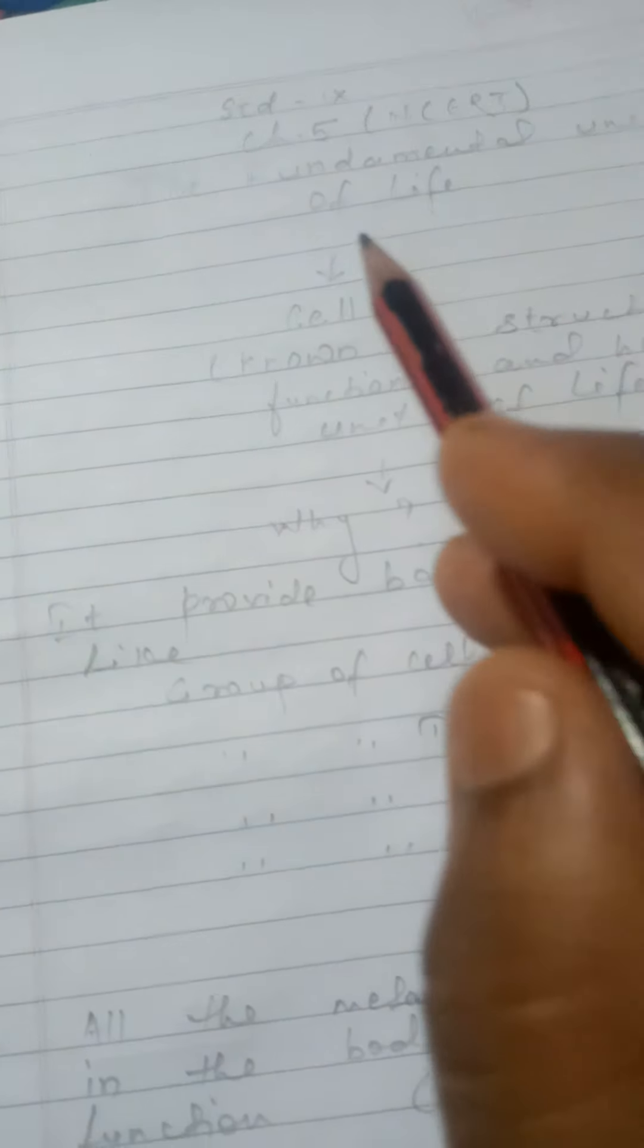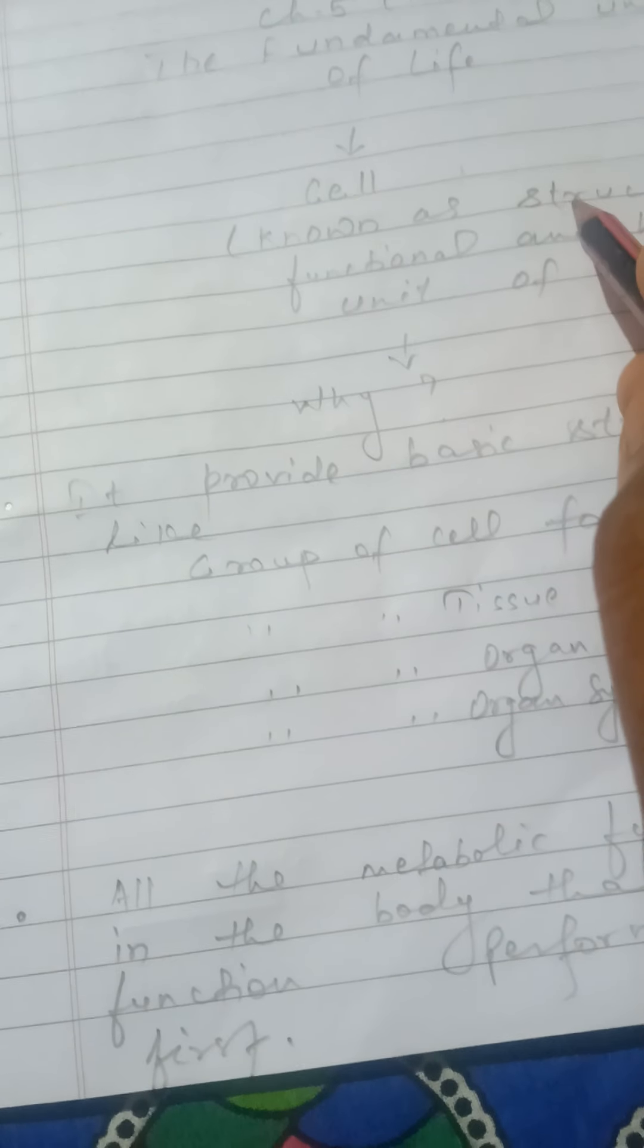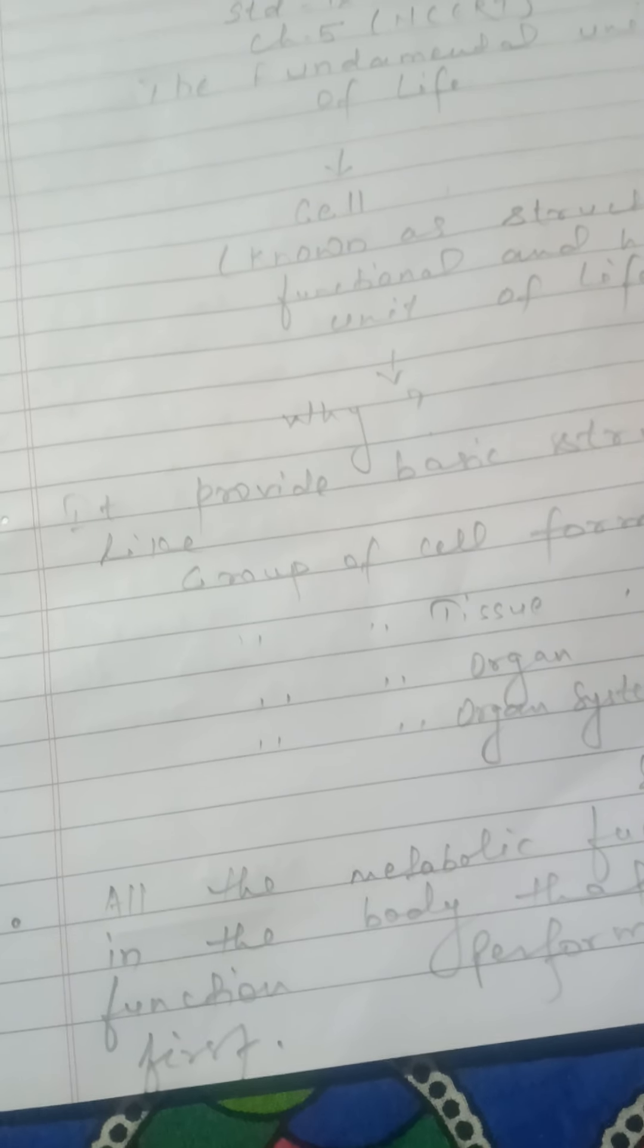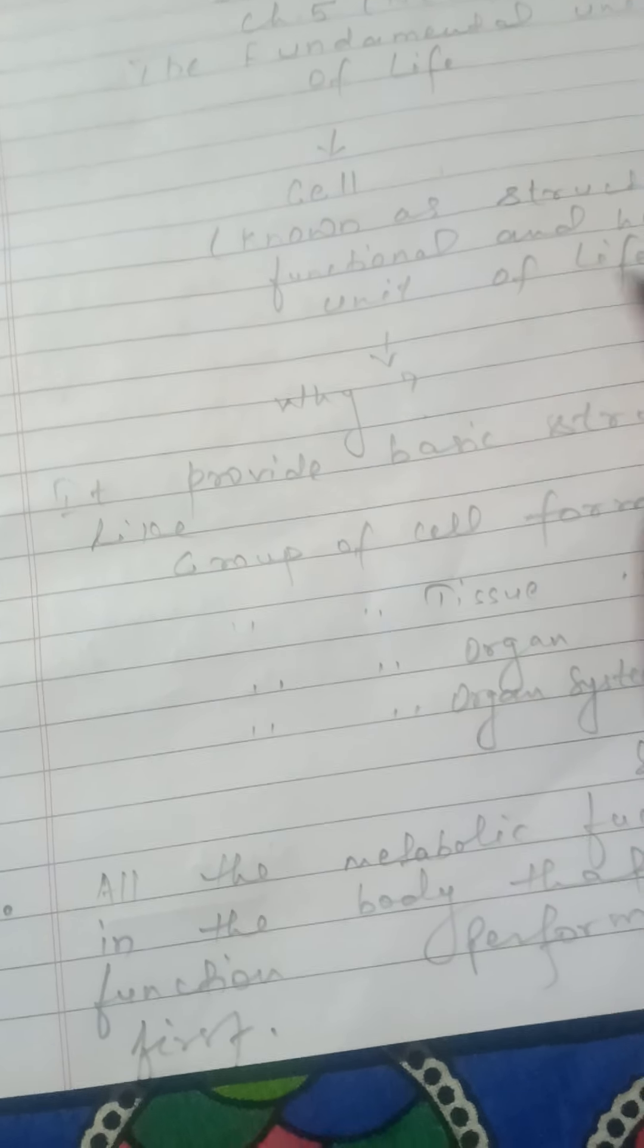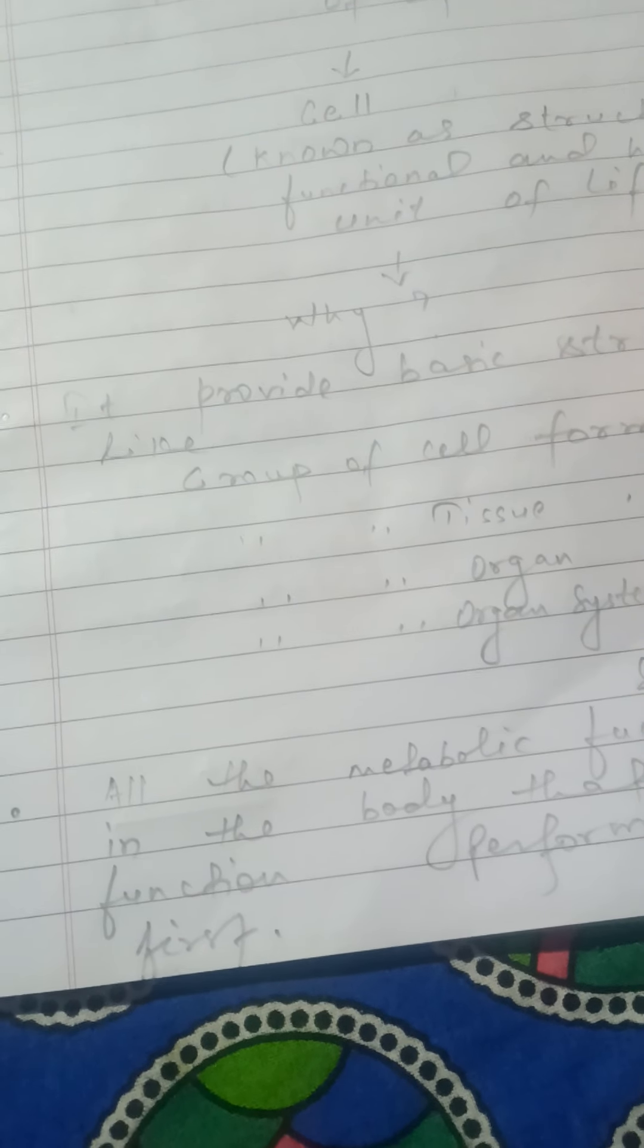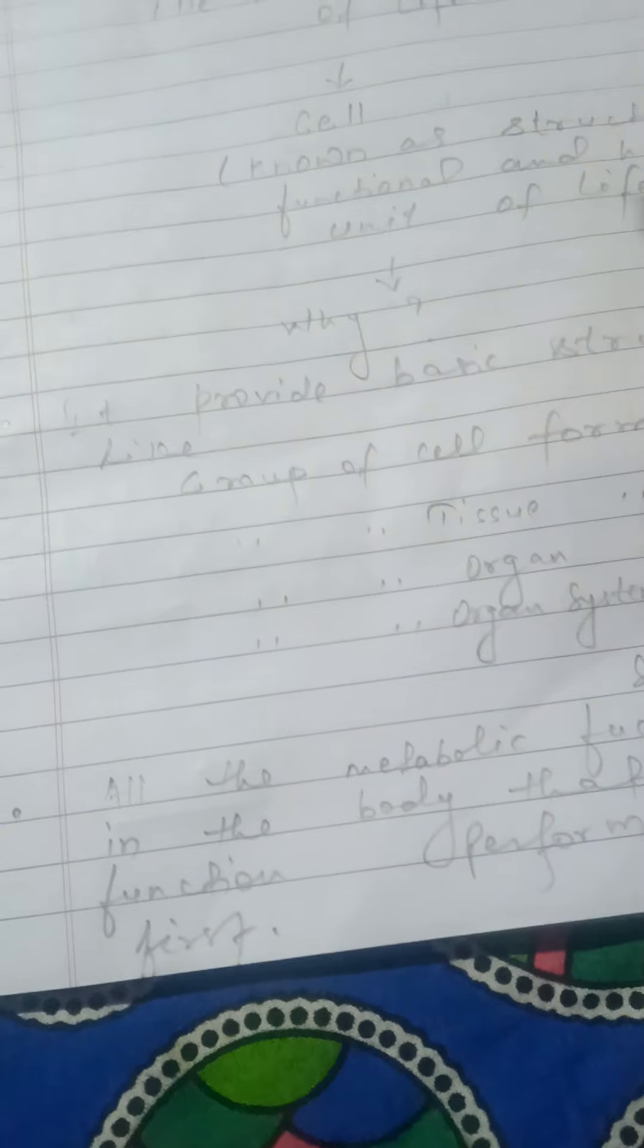You studied in standard 8 that the cell is the fundamental unit of life. It is also referred to as the structural, functional, and hereditary unit of life. Now, anyone can ask me: why is the cell referred to as a structural, functional, and hereditary unit of life?